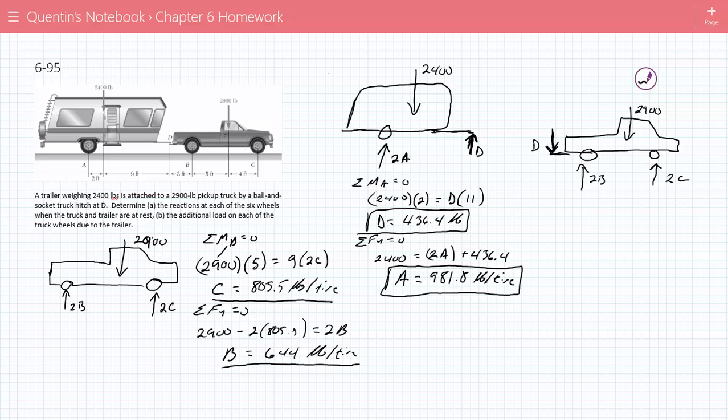So, then we can just figure it out. We'll do this again. The sum of the moments at B is equal to zero. So now you have D times the distance from there to there, which is three feet. And that's going to be in the same direction as plus 2C times nine, which is the distance from there to there. And that is going to equal to 2,900 times five. This moment is going to cause it to rotate this way, just like this one is also going to cause it to rotate in that same direction. So, we know D, D is 436, go through and calculate C, and therefore C is equal to 732.8 pounds per tire.